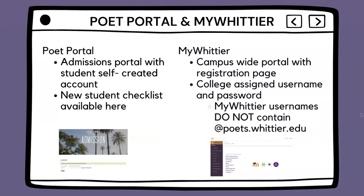We will start by differentiating your Poet Portal and your MyWhittier account. Your Poet Portal is your admissions portal where you have a self-created account with your own email and password. Your MyWhittier portal is a campus-wide portal with your registration page, and it includes important information regarding your classes, registering, finding events, and other things of that nature. You do have a college-assigned username and password, and please keep in mind that your username will not contain @poets.whittier.edu — only your email will.